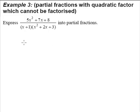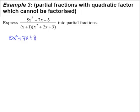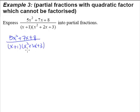Example 3 is an example with partial fractions with quadratic factors which cannot be factorized — referring to this denominator here. Based on what we said earlier in the introduction to partial fractions, the first thing we always do is factorize the denominator as much as we possibly can. In this case, this quadratic equation is not factorizable any further.